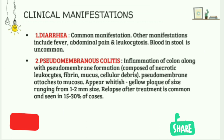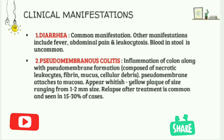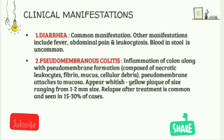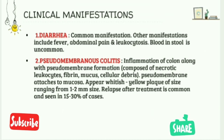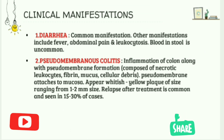The second manifestation is pseudomembranous colitis, also called Clostridium difficile colitis or antibiotic-associated colitis. It is an inflammation of the colon due to prolonged antibiotic use. A pseudomembrane forms over the colonic mucosa, composed of necrotic leukocytes, fibrin, mucus, and cellular debris. It appears as whitish-yellow plaques ranging from 1 to 2 mm, which can spread over the entire colonic mucosa.